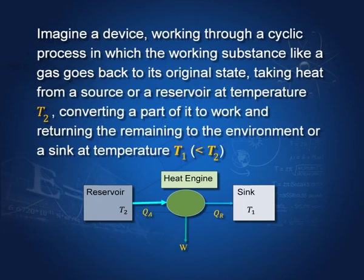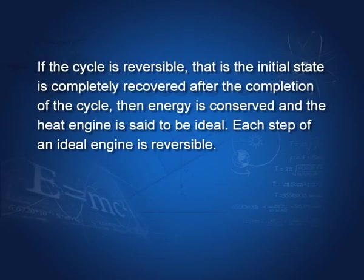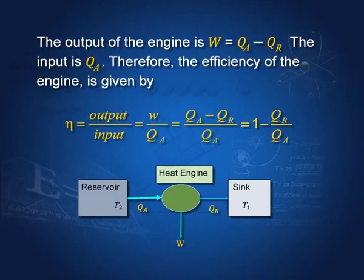The heat engine abstracts heat from a reservoir, converts part of it to work, and transfers the rest Q_r to the sink. The output is work W, and the input is Q_a taken from the reservoir. The efficiency is output divided by input: W = Q_a − Q_r, so efficiency = (Q_a − Q_r) / Q_a = 1 − Q_r / Q_a. That is the formula for the efficiency of an engine.